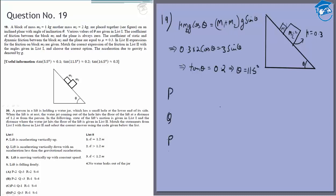We have options P, Q, R, and S. For P and Q, there is no slipping because the angle is less than 11.5 degrees. For R and S, there will be slipping because the angle is more than 11.5 degrees.